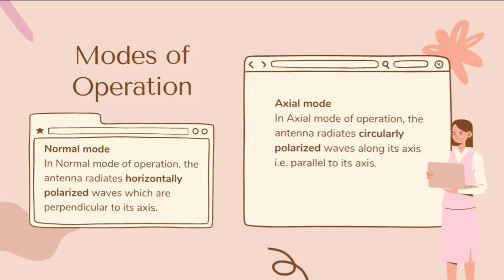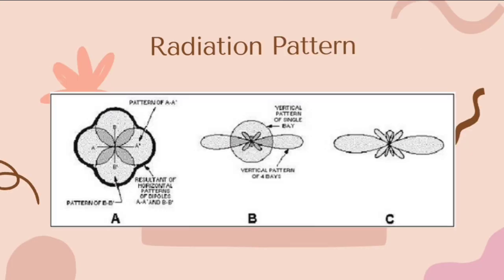The following are the modes of operation of a turnstile antenna. In normal mode operation, the antenna radiates horizontally polarized waves which are perpendicular to its axis. While in axial mode of operation, the antenna radiates circularly polarized waves along its axis, parallel to its axis. For circular polarization, the transmitter radiating with right circular polarization should have a receiver with the same right circular polarization and vice versa. If it is left circular polarized, unlike the transmitter, there will be a severe loss of gain. The radiation pattern will be similar to the radiation pattern of two superimposed dipoles. Though it is close to an omnidirectional pattern, it leaves a cloverleaf-shaped pattern.